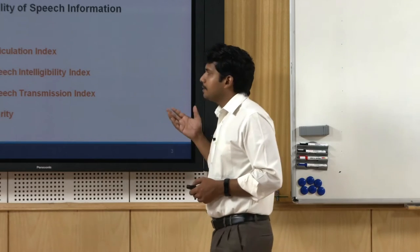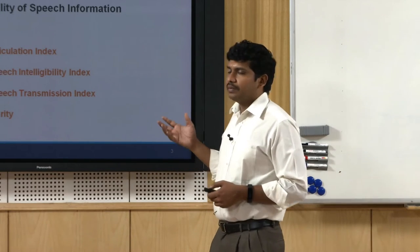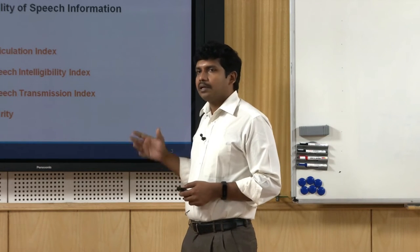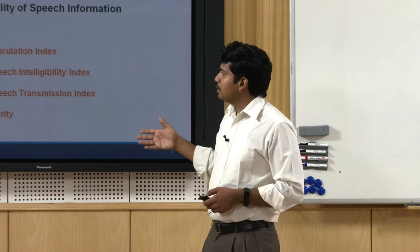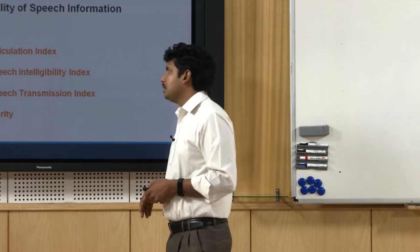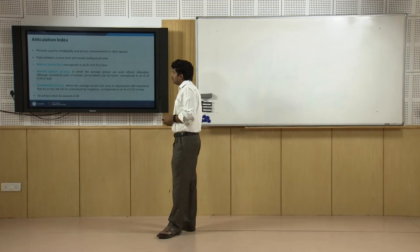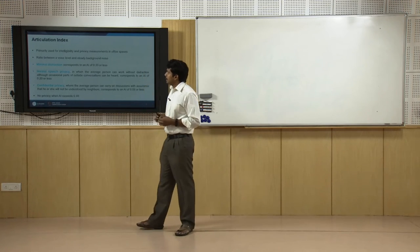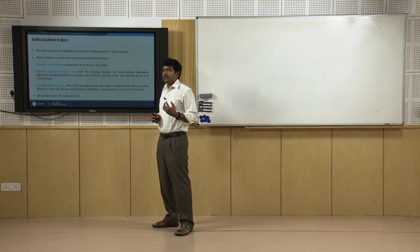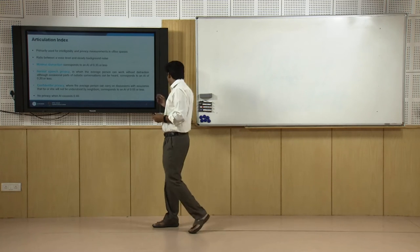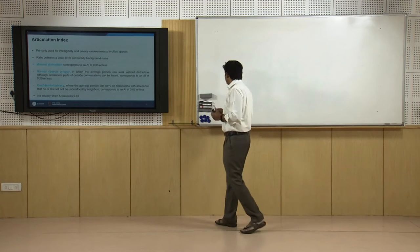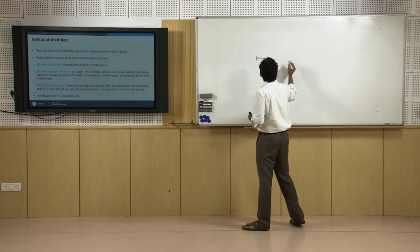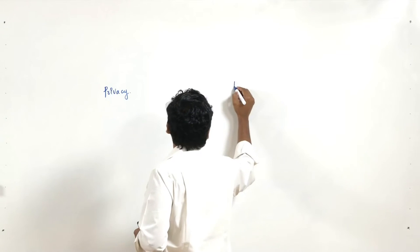There are more indicators — I have only chosen four to talk about. There are also indicators like definition and envelopment. Let us look more clearly into these factors. The articulation index was originally developed to study sound privacy and intelligibility requirements in open office spaces. There are two things to understand: sound privacy and intelligibility.